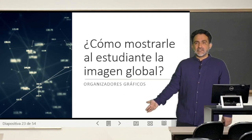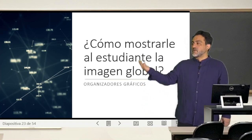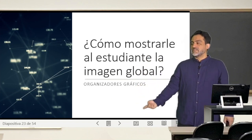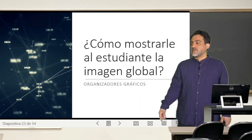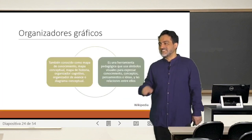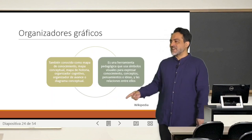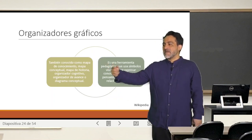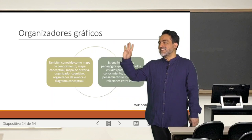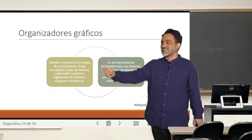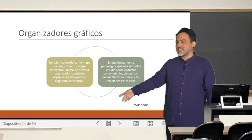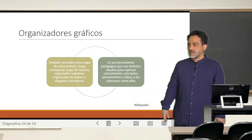Ustedes ya saben, y esto lo hemos discutido, que cómo mostrarle al estudiante esta imagen global lo más fácil es lo llamado organizador gráfico. También llamado, según Wikipedia, mapa de conocimiento, mapa conceptual, mapa de historia, organizador cognitivo, organizador de avance, o diagrama conceptual.